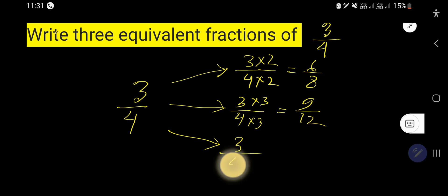Then, look, we need to multiply 3 over 4 by the same number. After 3, we can multiply by 4.